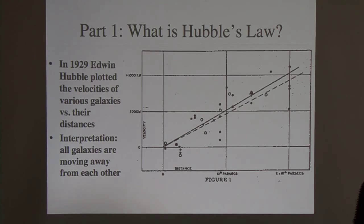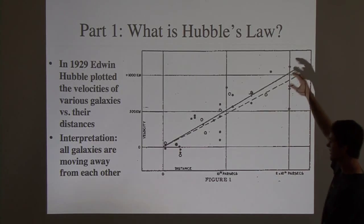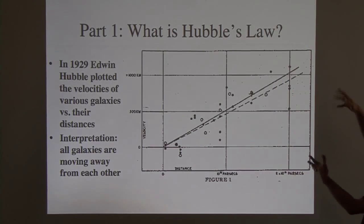Let me start with what Edwin Hubble had in 1929. They were measuring the velocities of different galaxies. So this is actually the data taken from Hubble's paper. This is what he published.